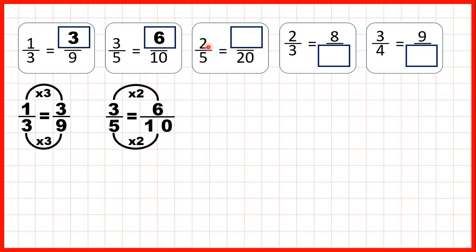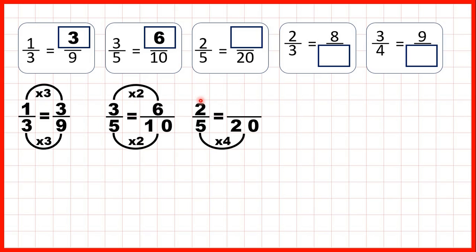Now, two fifths is equivalent to how many twentieths? Five times four is twenty, so to work out our missing numerator we need to do two times four, which is eight.